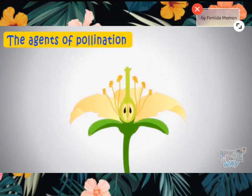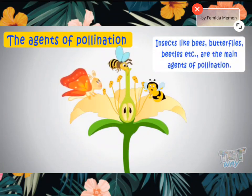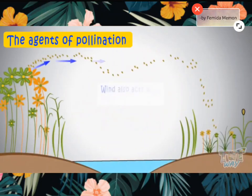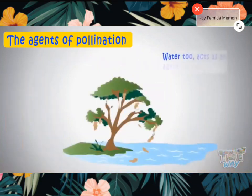Insects like bees, butterflies, beetles, etc. are the main agents of pollination. Birds and mammals too pollinate some flowers. Wind also acts as an agent of pollination. Water too acts as an agent of pollination.